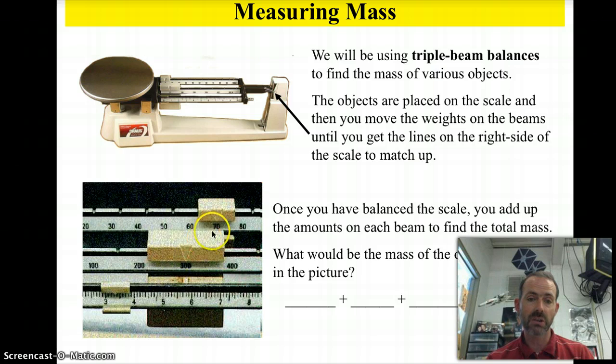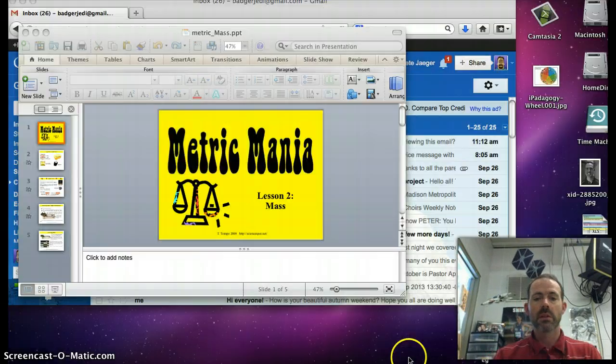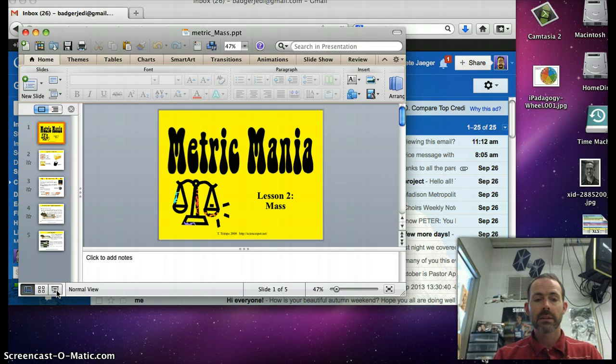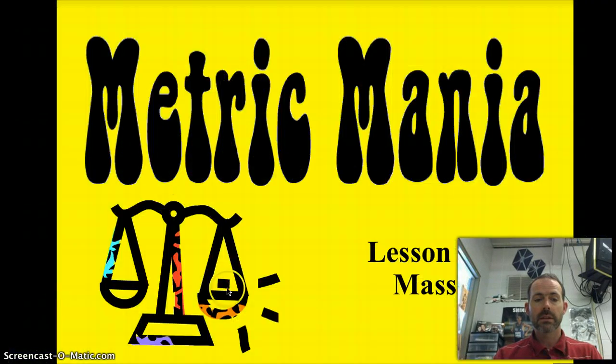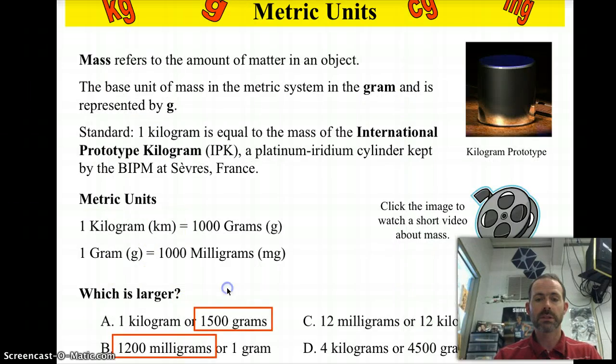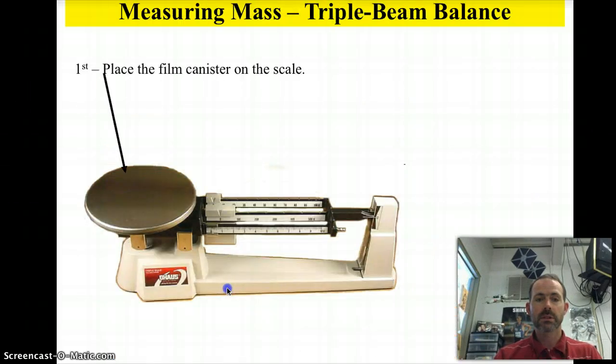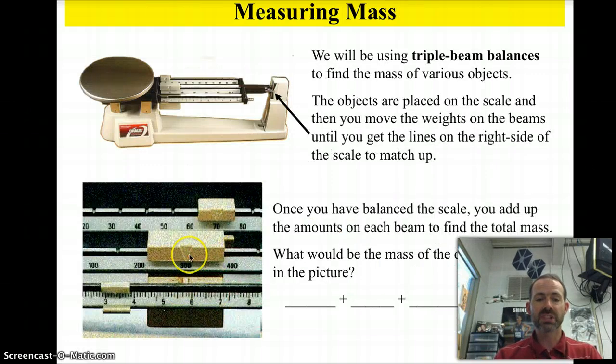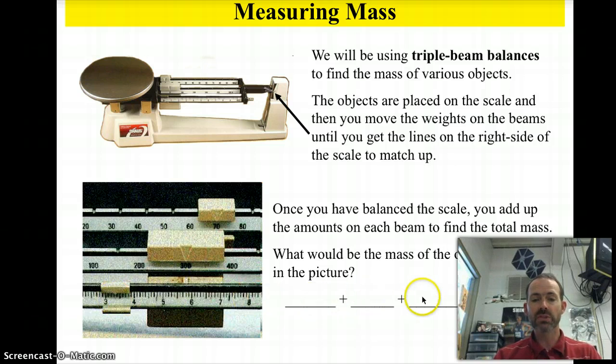So if this were the case right here, let's say this one was pointed at the 300, that one was pointed at the 70, the back one, and the front one was at 3.3. I'm going back to the part I messed it up there. So if we had 300 plus 70 plus 3.4, you add all those up, it is 373.4 grams.